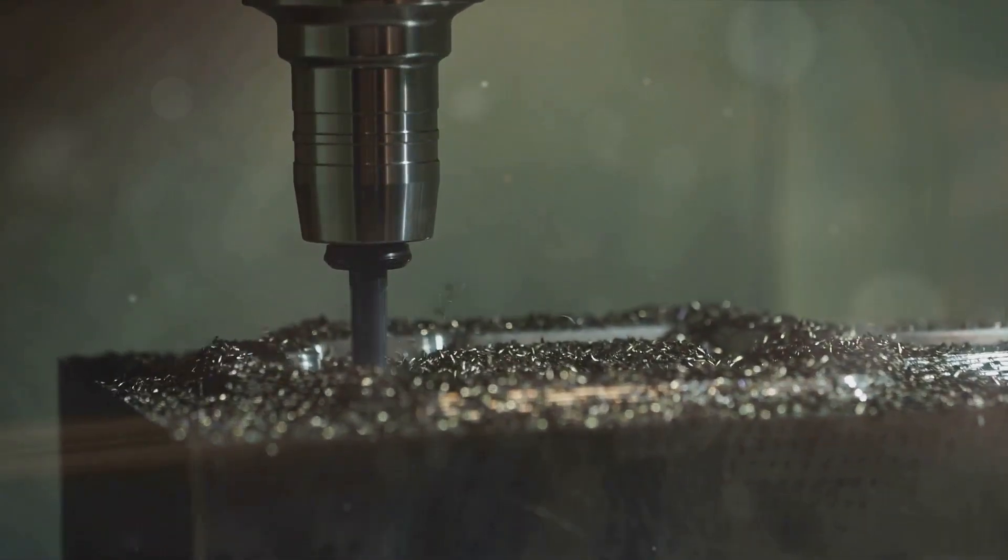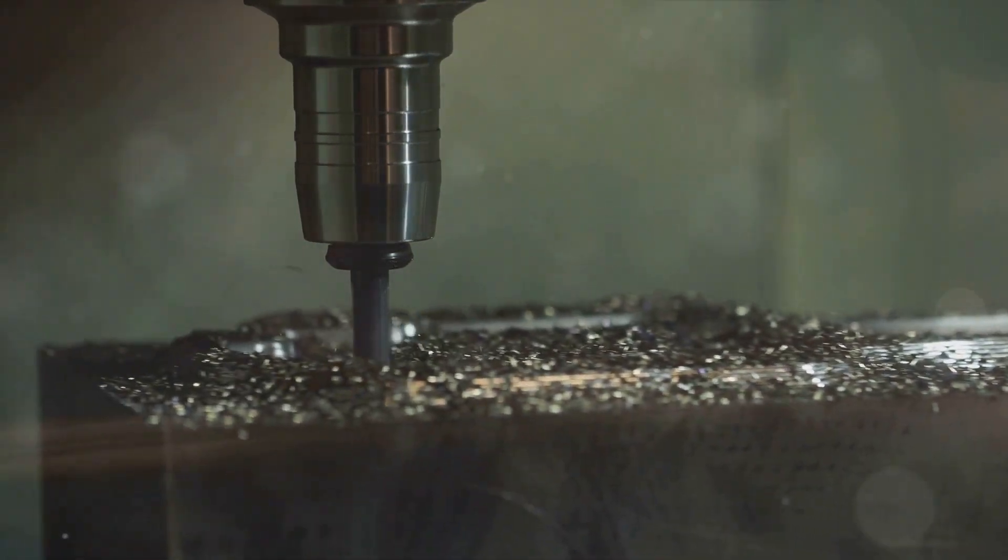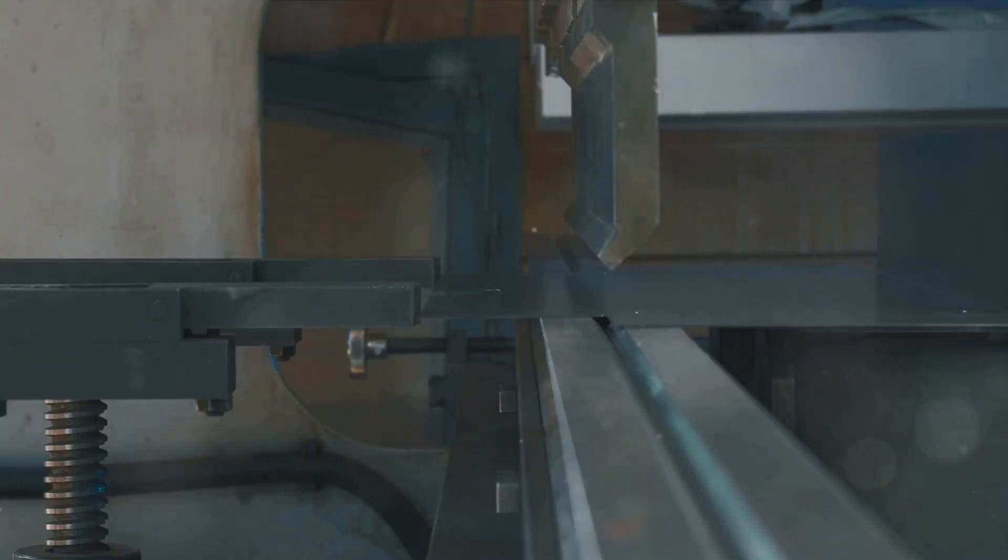Imagine the knurling machine as an artist, using its knurls like a brush to draw precise repetitive patterns, but instead of paint, it uses pressure and rotation. The result is a beautifully textured surface that not only looks aesthetically pleasing but also serves a practical purpose.